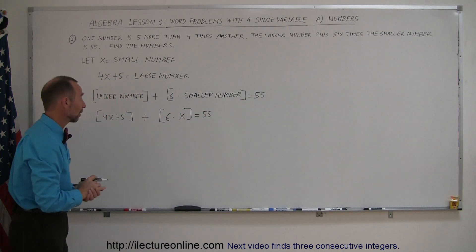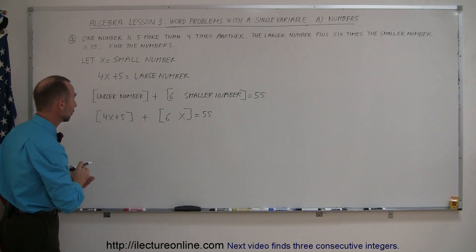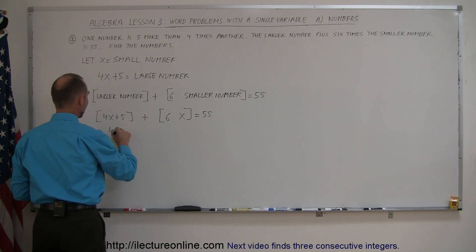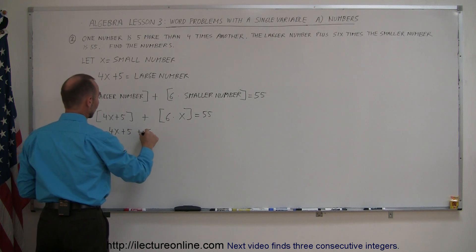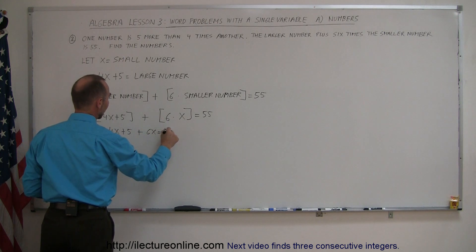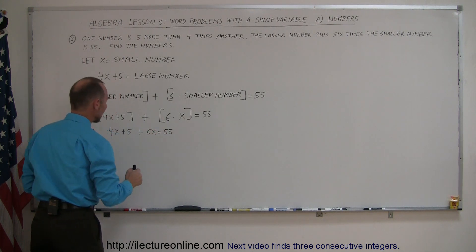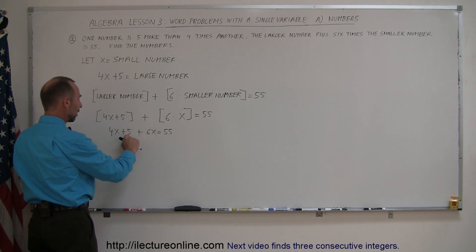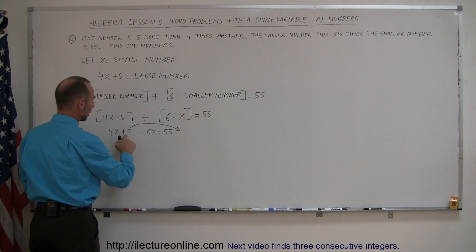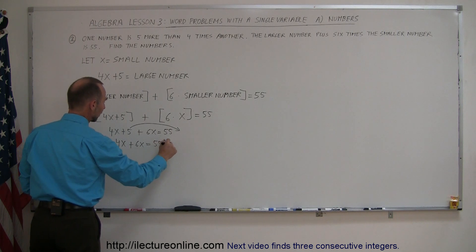Now, we can go ahead and solve this equation for x. Let's get rid of the brackets, we don't need them, so we can say 4x plus 5 plus 6x equals 55. Okay, now we keep all the terms with x on one side, move everything else to the other side. So the plus 5 goes to the other side and it becomes negative 5, so we have 4x plus 6x is equal to 55 minus 5.